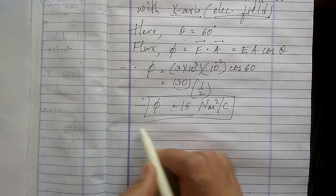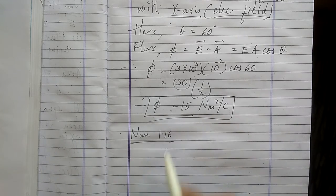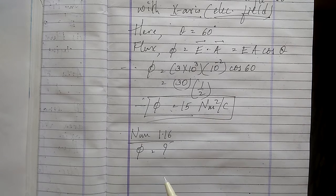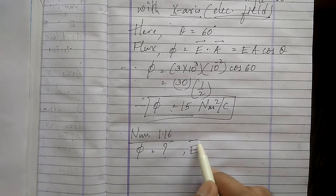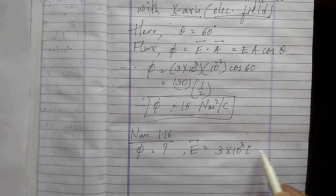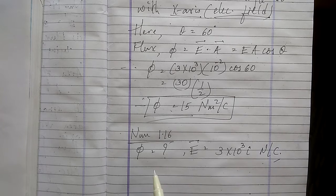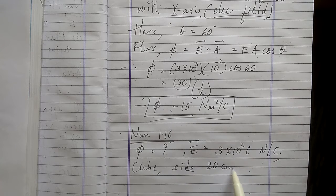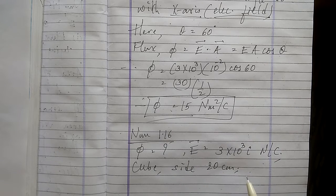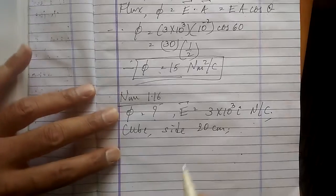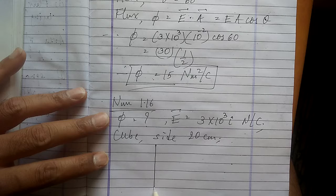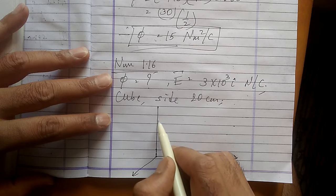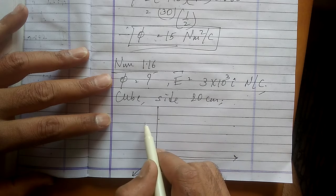Numerical 1.16: what is the net flux through a uniform electric field along the X-axis? E⃗ = 3×10³ î Newton per coulomb, through a cube of side 20 centimeters oriented with faces parallel to the coordinate planes. Let me draw the cube.